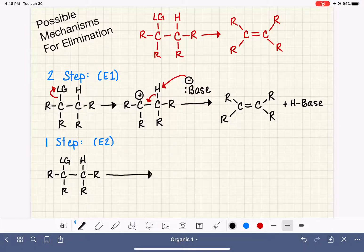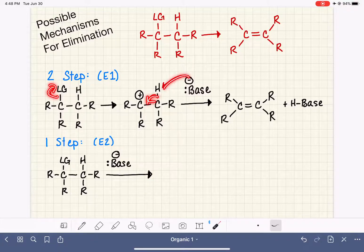So here we are going to start off right away with our base and its lone pair of electrons. What we need to have is all of these same curved arrows taking place. It's just that they're going to happen all at the exact same time.